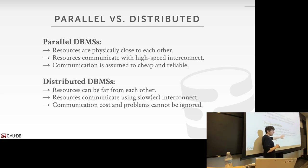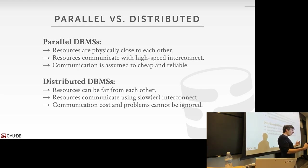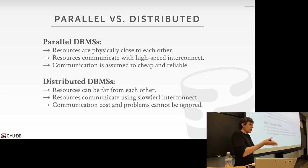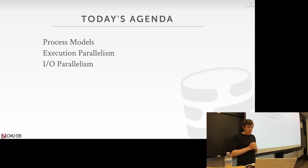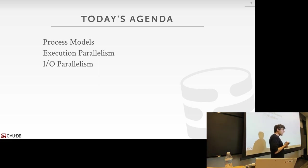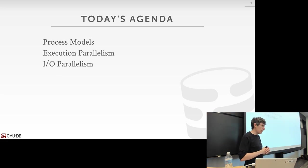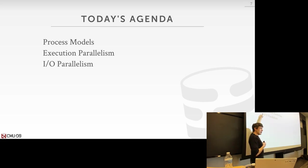There's a whole set of hard problems we have to deal with in distributed databases, so we'll ignore those for now and focus on parallel databases — assume a machine with a bunch of sockets and cores that can all operate simultaneously, possibly talking to the same local disk. Today's agenda: first we'll talk about the process model — how we organize the system to have workers execute queries — then parallel query execution, then IO parallelism, and finally a quick midterm review.